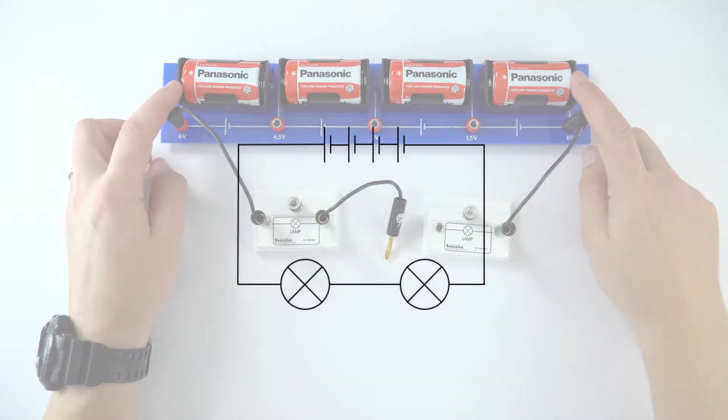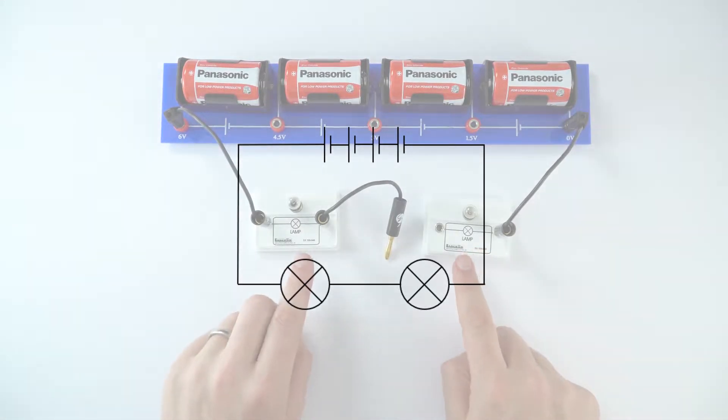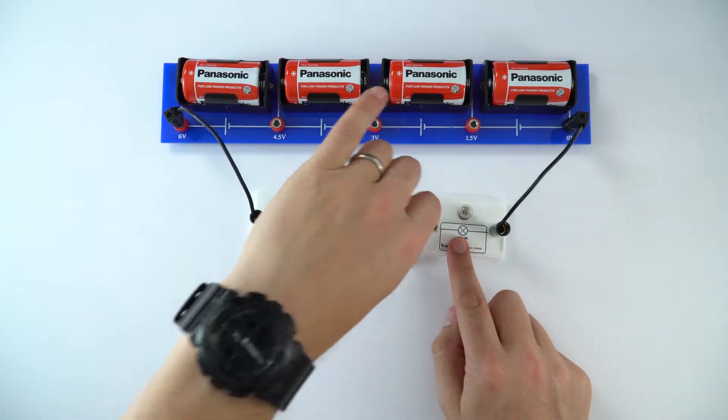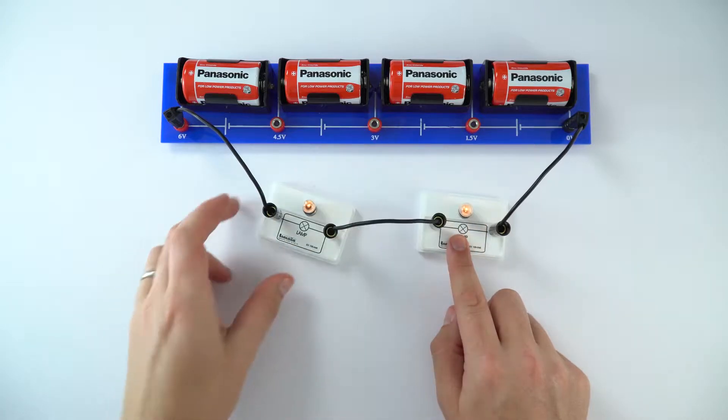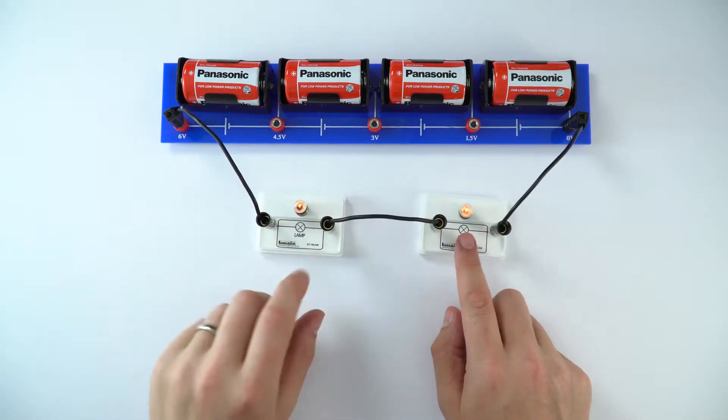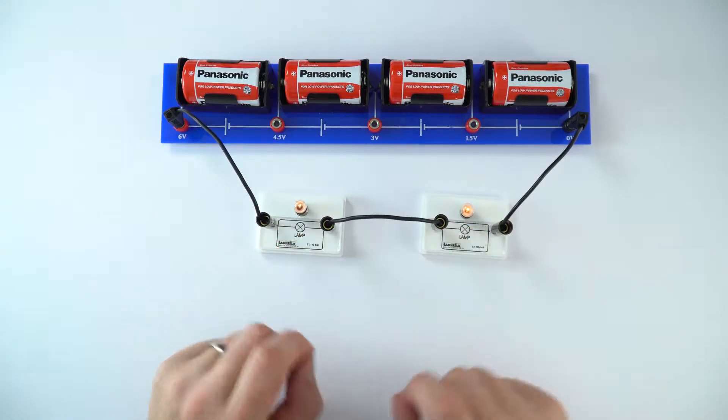So I have here my battery made up of many cells and I've just got two lamps. At the moment when I connect them up they are in series, and because both of these lamps are approximately the same, they are shining at the same brightness.